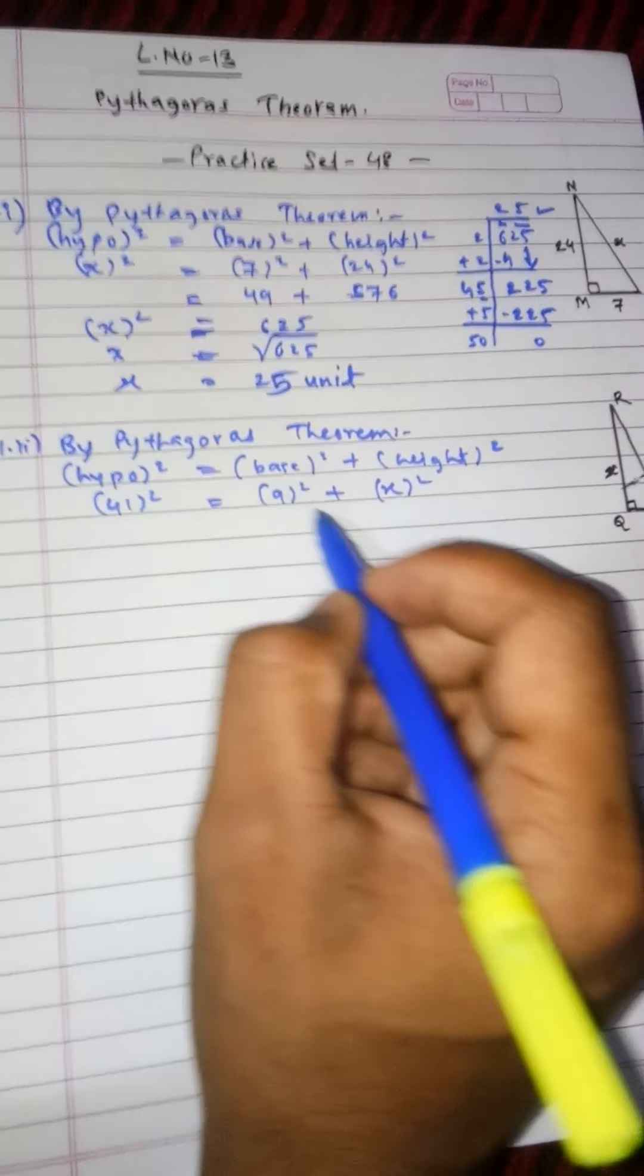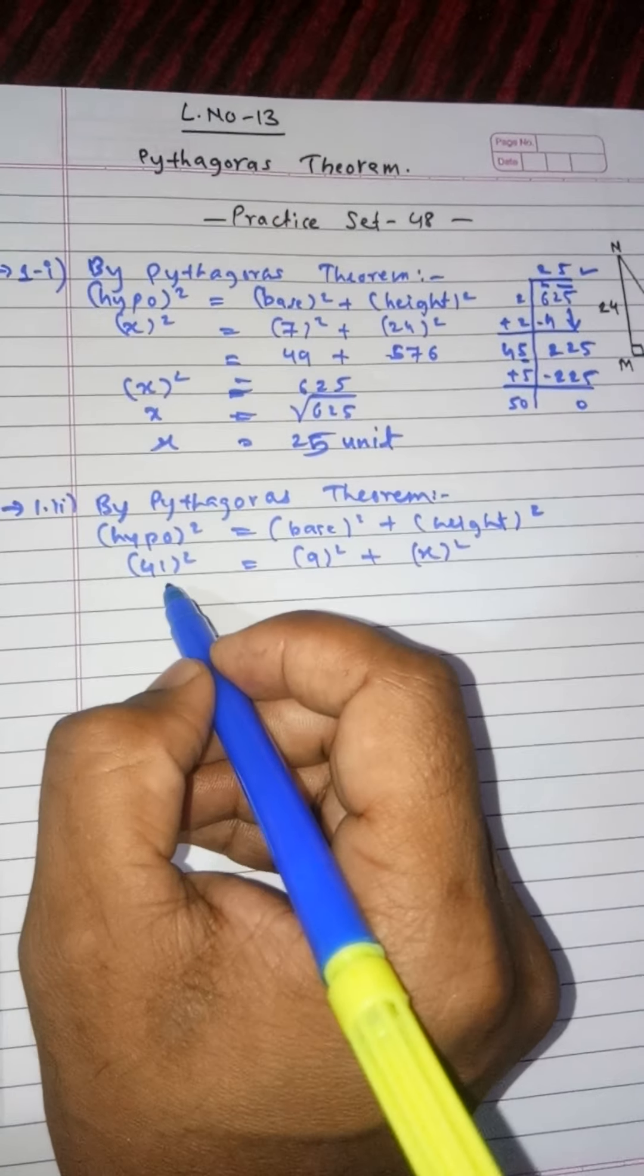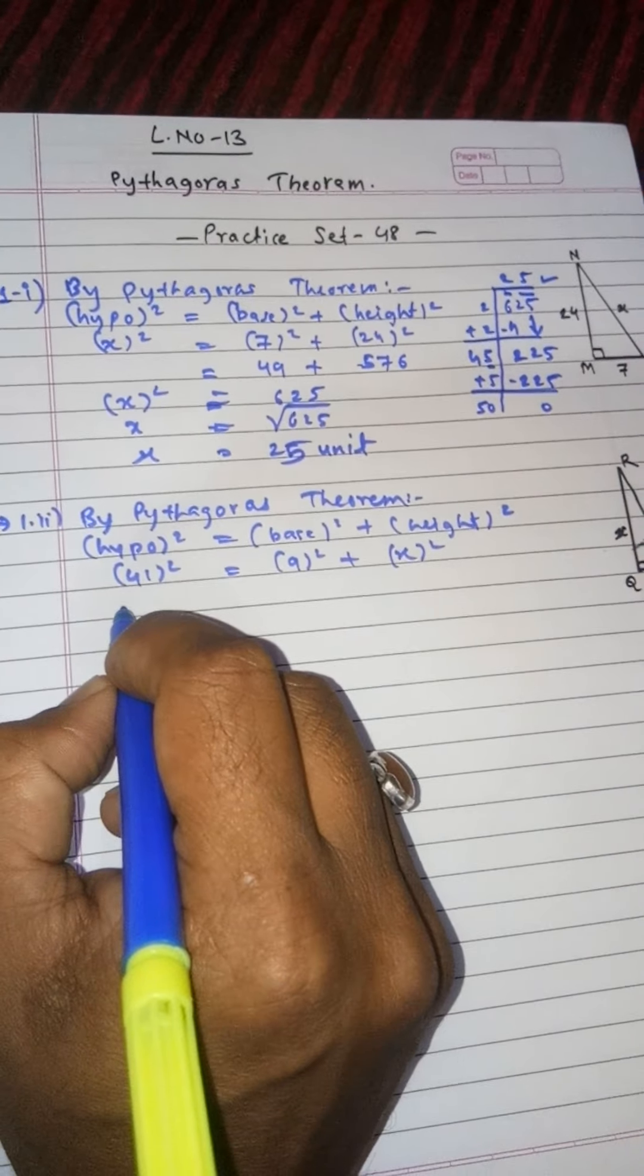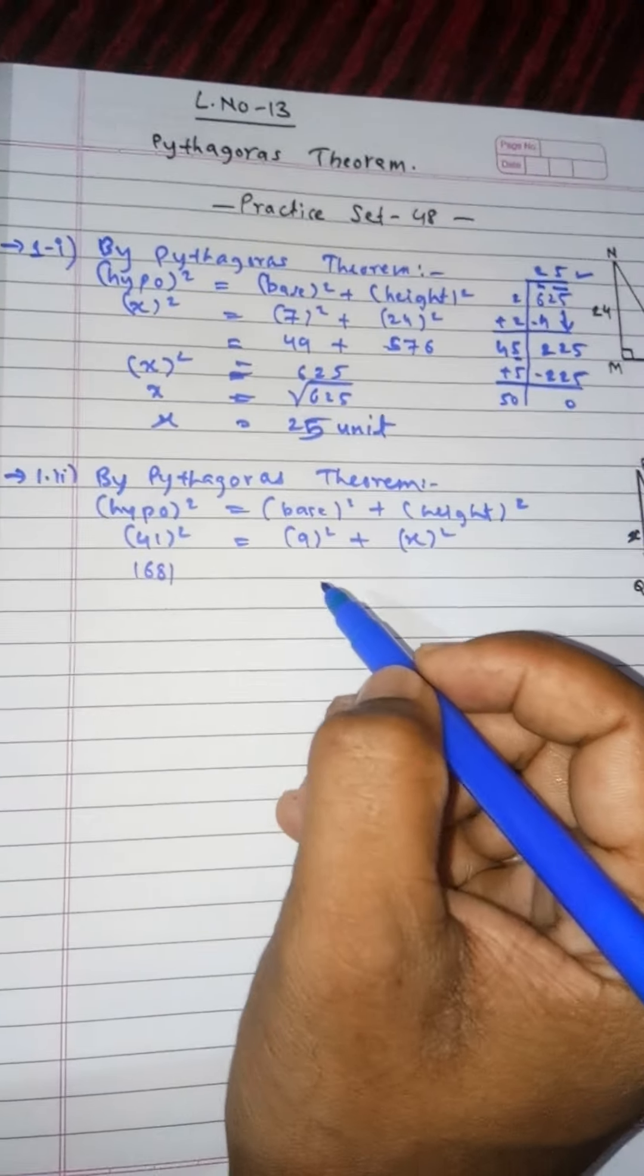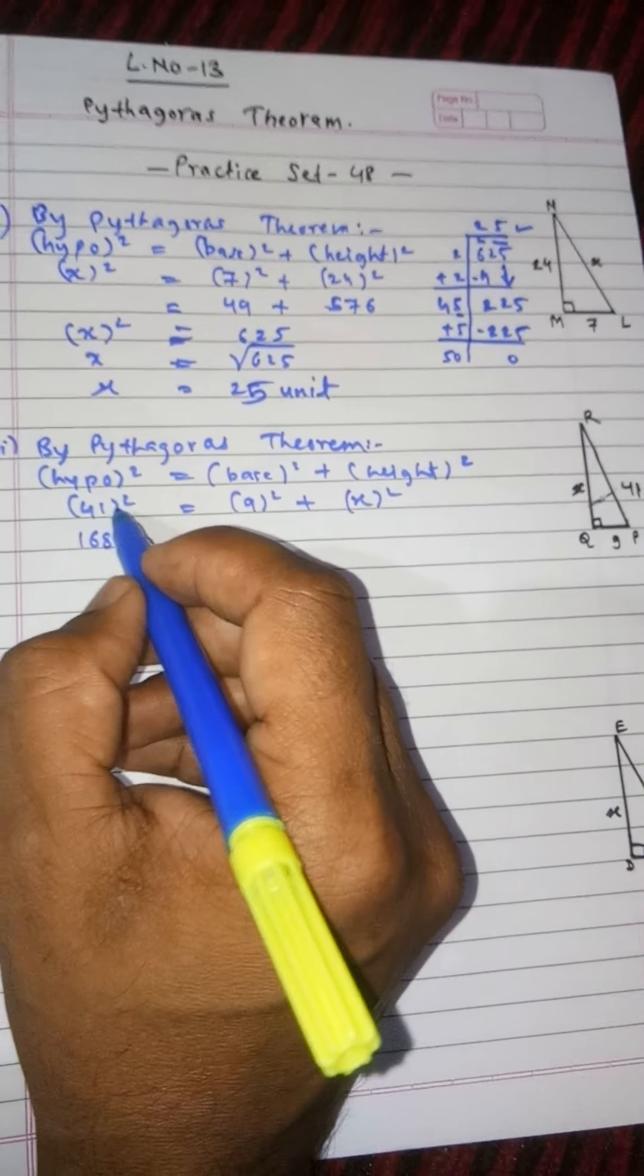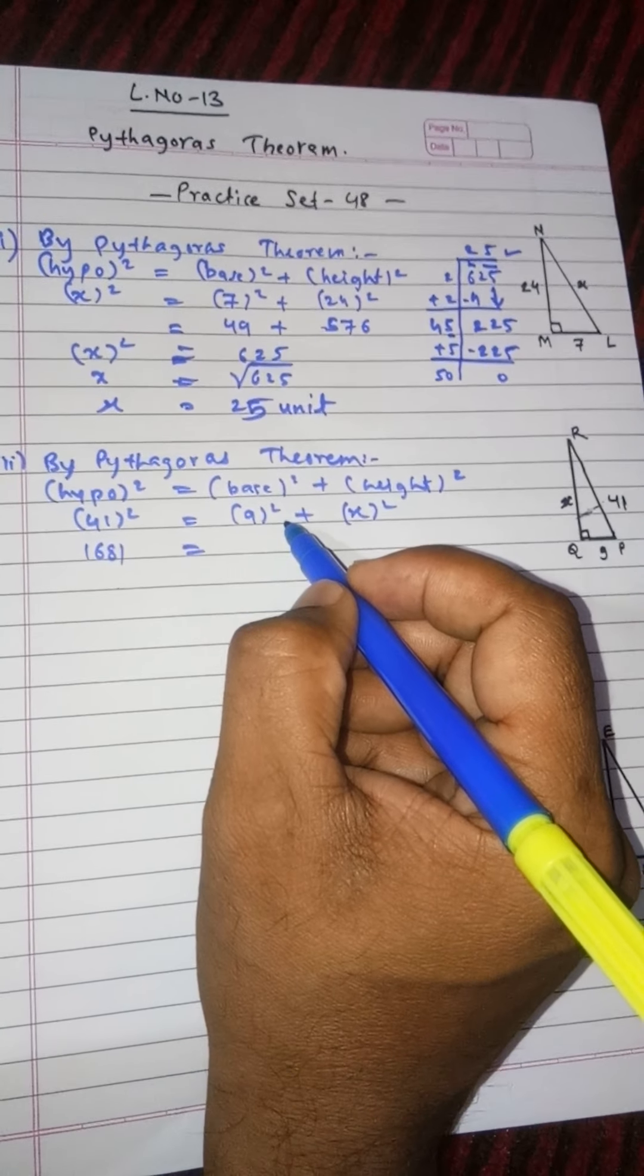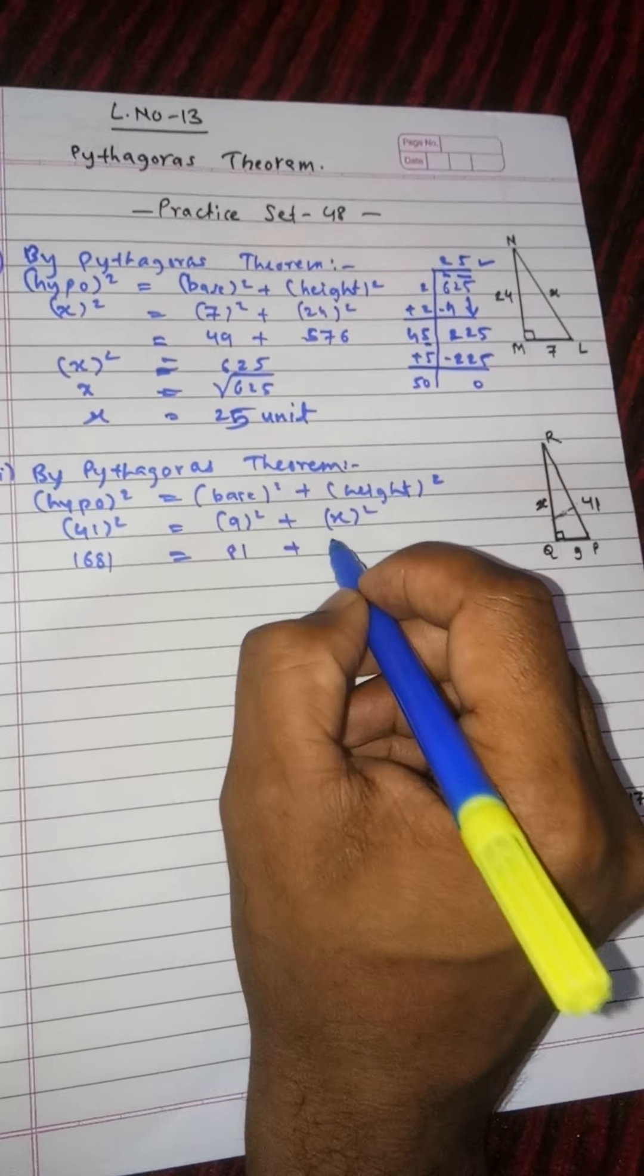We have kept the value of hypo. Now 41 squared, what does square mean? 41 into 41. If we multiply this, the answer will come 1681. Children, please do in the rough work, it will be good practice for you. Then square of 9, it's very easy, the answer is 81, plus x squared.